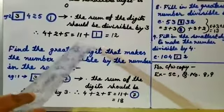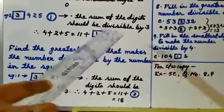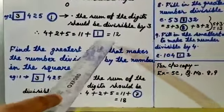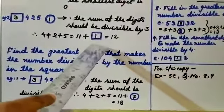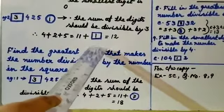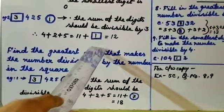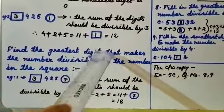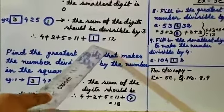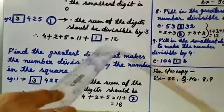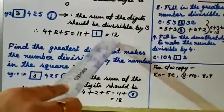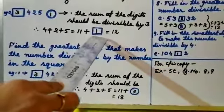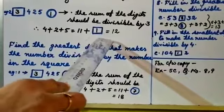You cannot go to the next multiple beyond 12, because you have to find the smallest digit. After 11, the next multiple of 3 is 12, and the smallest digit to add is 1. If you go to the next multiple, the digit you add will be greater than 1. So the answer is 1.